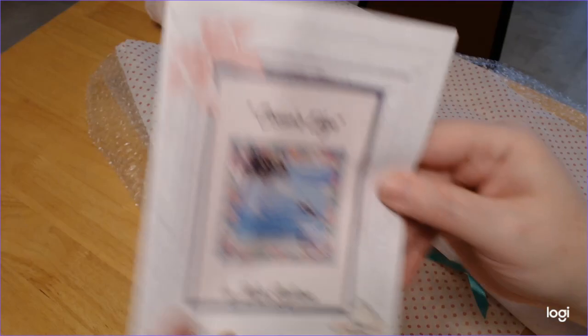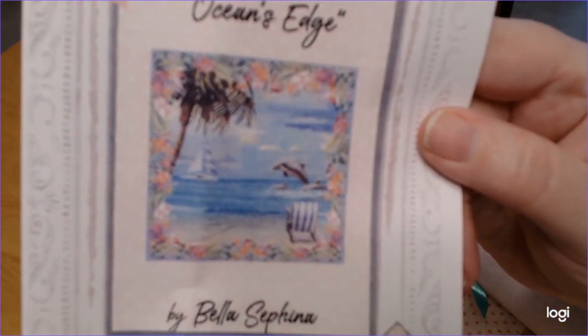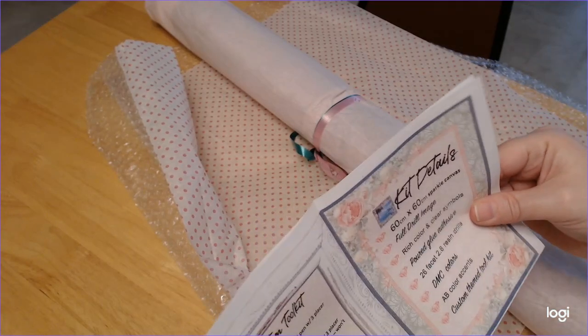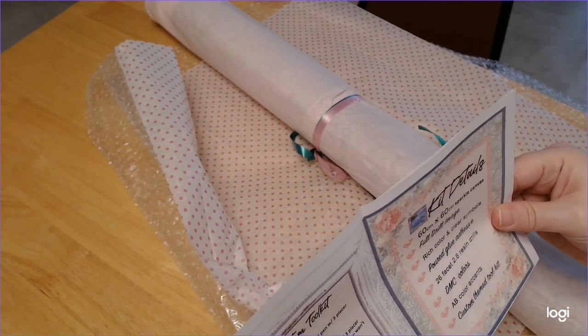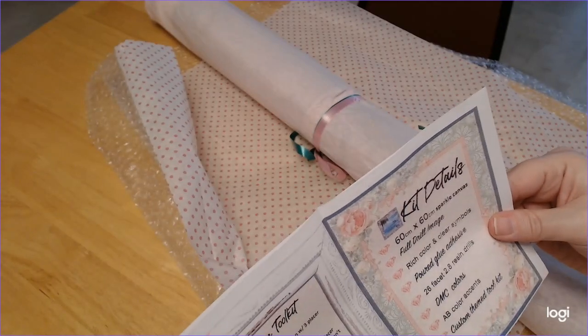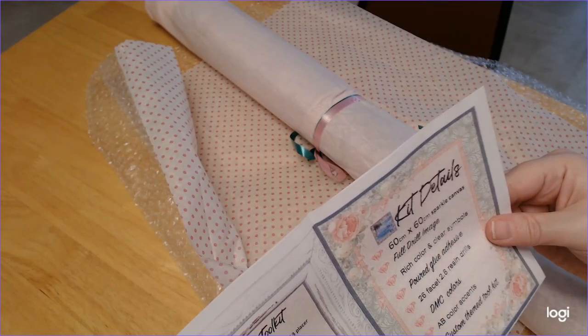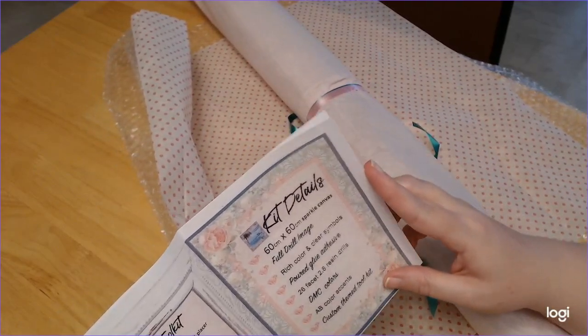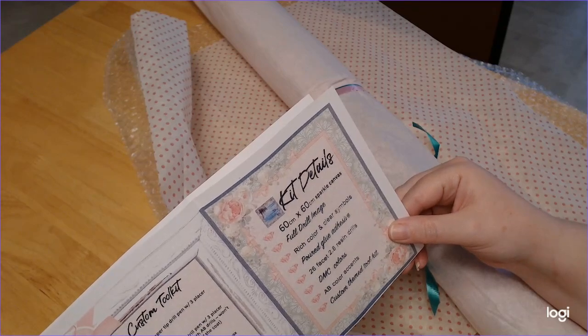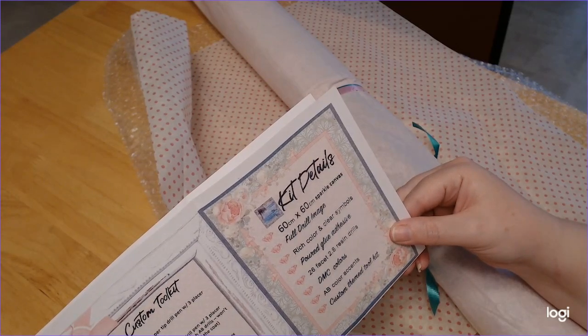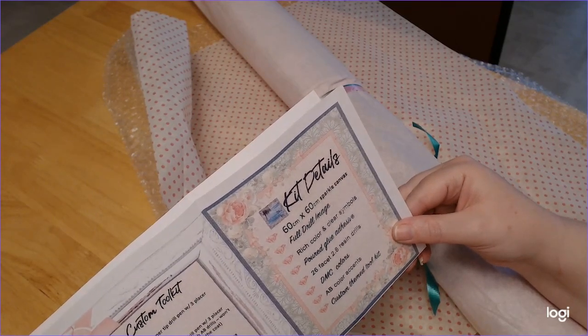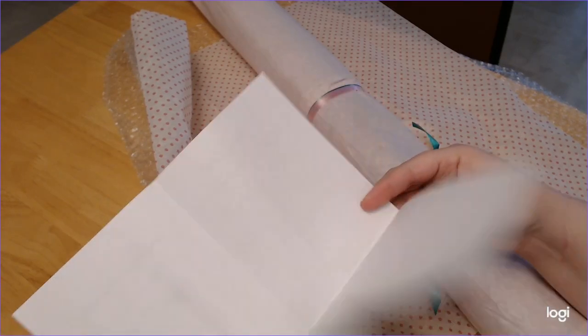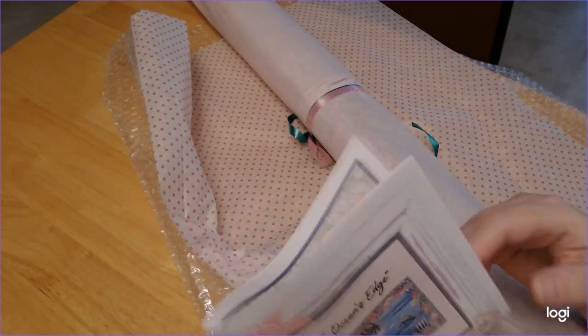So here's a pamphlet - Ocean's Edge. This is a custom toolkit. Kit details: 60 by 60 sparkle canvas, full drill image, rich color and clear symbols, pre-glued adhesive, 26 facet 2.8 resin drills, DMC colors, AB color accents. Custom themed toolkit - sweet!